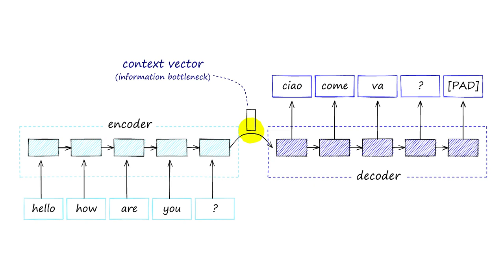More specifically, I want to have a look at machine translation. Machine translation uses something called an encoder-decoder network, where you have an encoder — a set of recurrent units, usually something like LSTMs or GRUs — and that encoder would encode some input text, say English, into something called a context vector. This context vector is then passed along to a decoder network, which again is just another set of LSTM or GRU units, and it would decode those into the target language, say Italian. That is how machine translation works with recurrent neural networks.